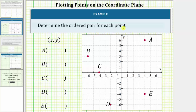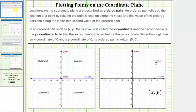We're asked to determine the ordered pair for each point plotted on the coordinate plane. For a quick review, locations on the coordinate plane are described as ordered pairs. An ordered pair tells you the location of a point by relating the point's location along the x-axis, which gives the first value of the ordered pair, and along the y-axis, which gives the second value of the ordered pair.